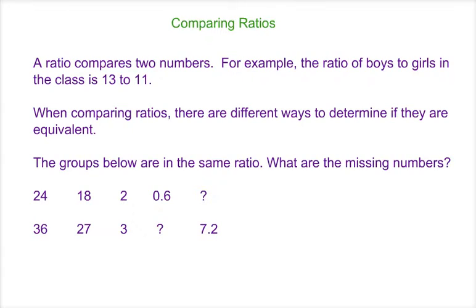So an example of a ratio would be the ratio of boys to girls in the class is 13 to 11. Now, when we're comparing ratios, there are different ways you can determine if they are equivalent.